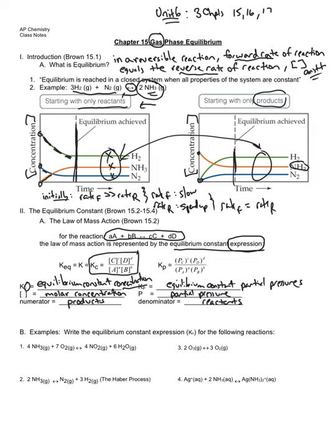The concentration of each product goes on top, raised to their coefficient powers. These are not orders like in rate laws — these are actually the coefficients. Divide by the reactant molar concentrations raised to their coefficients. If I know what those concentrations are, I can plug them in and calculate the value of KC. So part A of a problem might ask you to write the expression, and part B might ask you to calculate the actual value — that's a typical pattern in equilibrium FRQs.